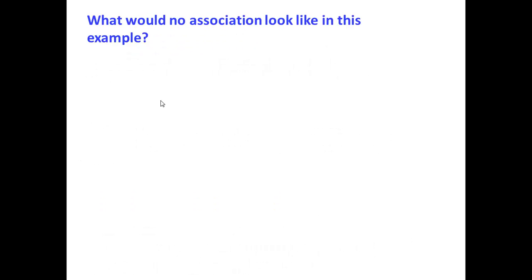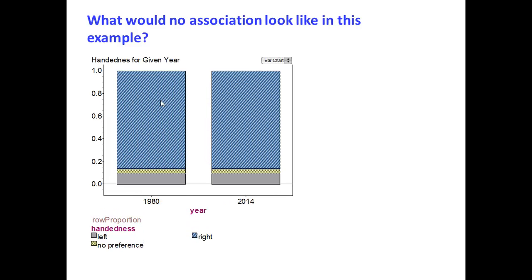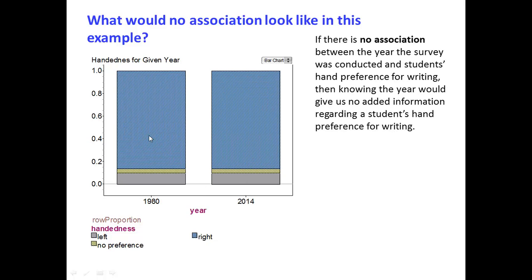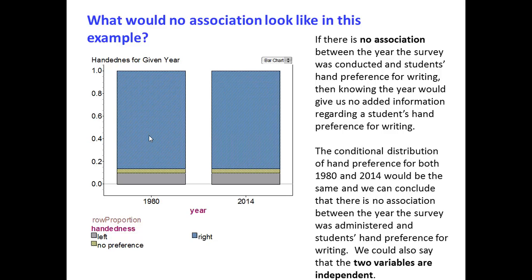What would no association look like in this example? Here's a segmented bar graph of no association. Notice that the values for each of left, right, and no preference are the same. If there's no association between the year the survey was conducted and students' hand preference for writing, then knowing the year would give us no added information regarding a student's hand preference. The conditional distribution of hand preference for both 1980 and 2014 would be the same, and we could conclude there is no association — we could also say that the two variables are independent.